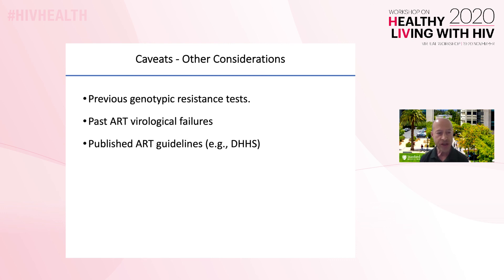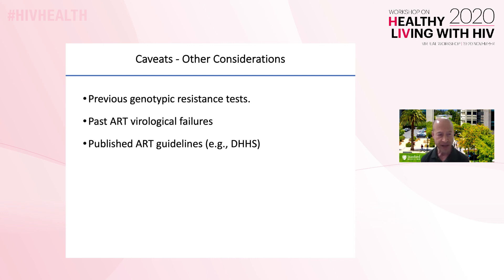In conclusion, a single genotype cannot be used alone to guide therapy. It is also important to know whether a person with HIV had other earlier genotypic resistance tests, and whether virological failure occurred with any previous regimen, even if genotypic resistance test results obtained at that time are not available. Finally, the results of genotypic resistance tests must be placed in the context of current treatment guidelines, because not all possible combinations of antiretrovirals are viable options.